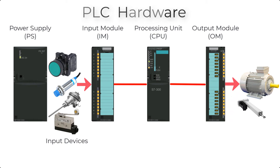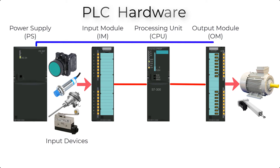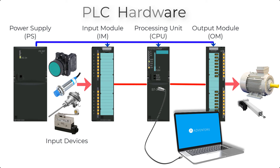The output module is connected to output devices like motors, actuators, indicators, etc. The power supply provides power to the input module, output module, and CPU. We also need a programming device to write a program and transfer it to the CPU memory.